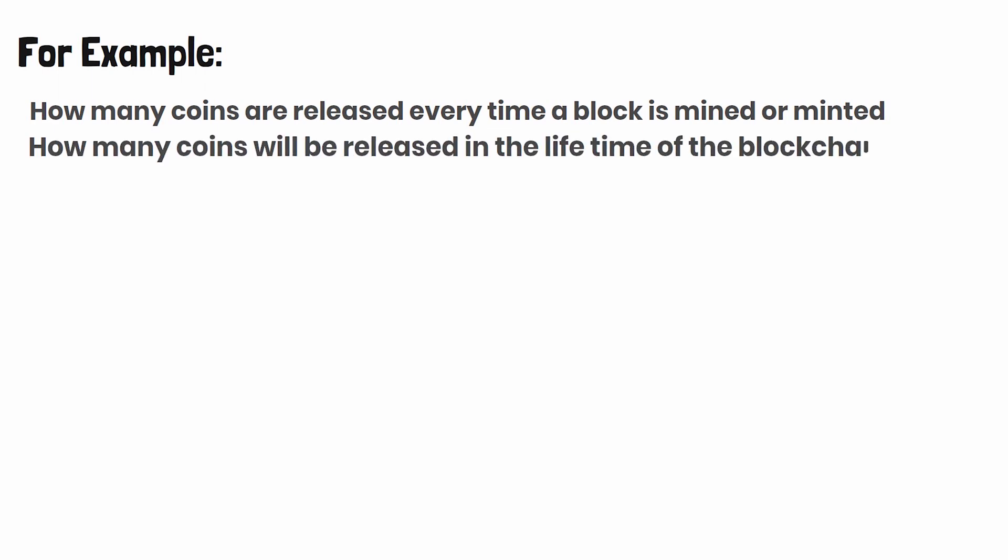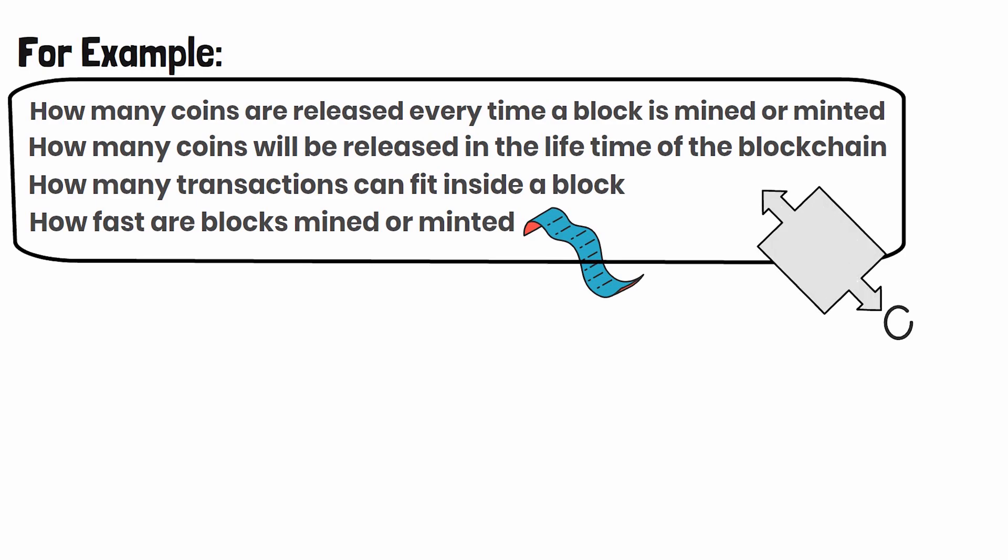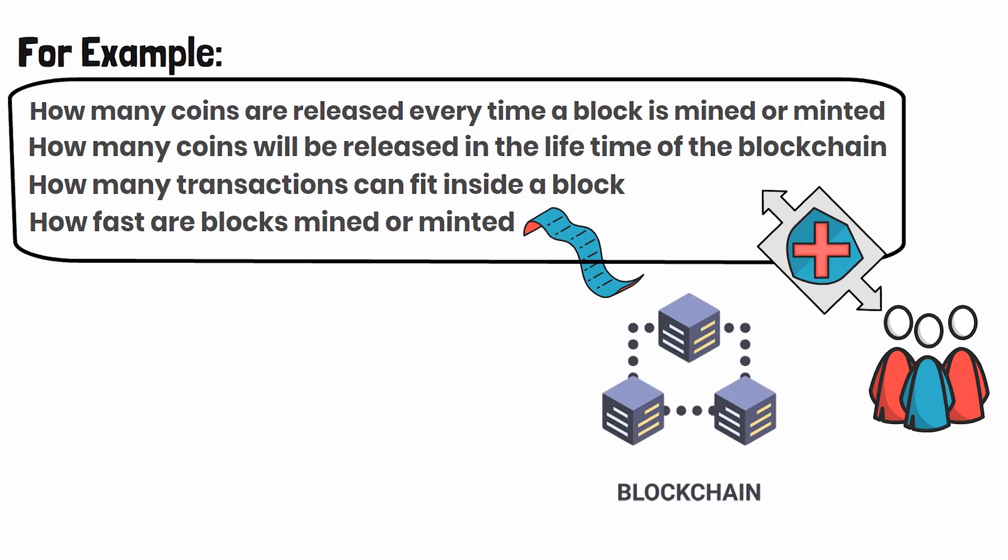For example, how many coins are released every time a block is mined or minted, how many coins will be released in the lifetime of the blockchain, how many transactions can fit inside a block, how fast are blocks mined or minted, and the list goes on. All of this information is mission critical. You never want someone or a small group of individuals to be able to change these rules.